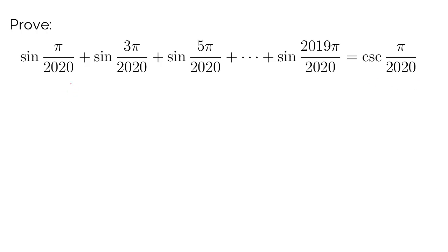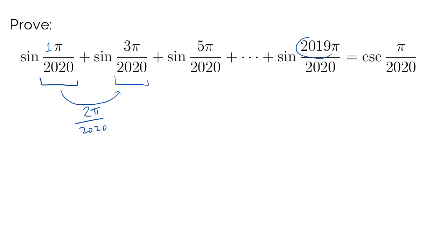Just to make sure no one is left confused, we are adding 2 pi over 2020 each time we progress in the summation. So we are adding 2 pi over 2020 to go from 1 pi over 2020 all the way eventually to 2019 pi over 2020.